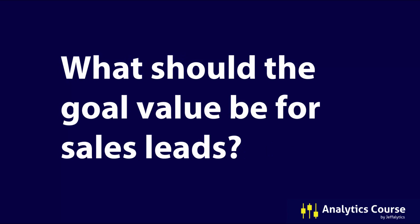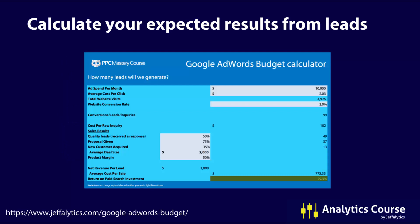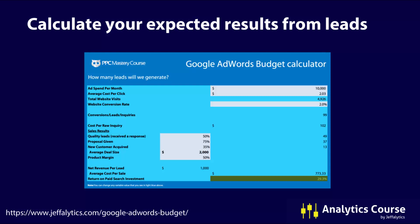What should be the goal value for sales leads — leads that come in to your sales team and go through an entire sales process? You can calculate your expected results from leads, and there are many frameworks to determine this. We actually have one for PPC course that we've published, freely available at jefflytics.com/google-adwords-budget. You can use this to calculate your close rates and all the pieces of information you need to determine what the value is for each lead you generate. On the screen, we have "net revenue per lead" — if you put in your own business numbers, you can determine what that is.